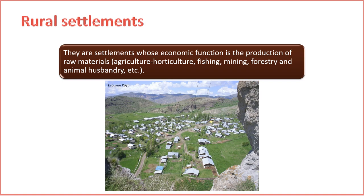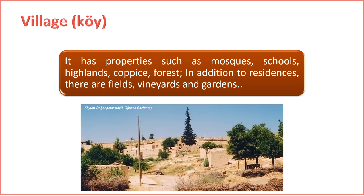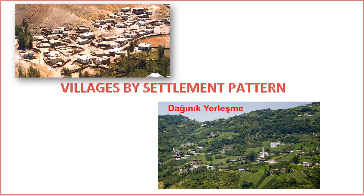Rural settlements contribute to the overall diversity of human habitation, offering a different lifestyle and set of challenges compared to urban areas. They play a crucial role in sustaining agricultural practices, preserving cultural traditions, and providing a unique quality of life for residents. A rural settlement unit different from the town in administrative status, social and economic characteristics, and population density is smaller and generally engaged in agriculture. As a rural settlement, a village has properties such as mosques, schools, highlands, coppice, and forest, and in addition to residences there are fields, vineyards, and gardens. The smallest settlement unit is the house, called the settlement nucleus. The distribution of settlement cores creates the settlement texture, influenced by landforms, water resources, type of economic activity, and security.